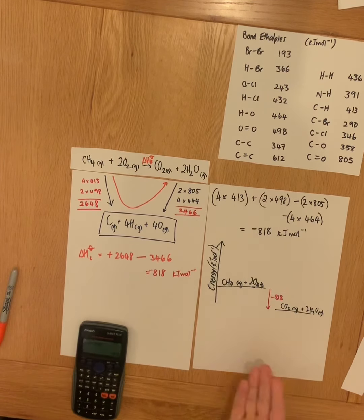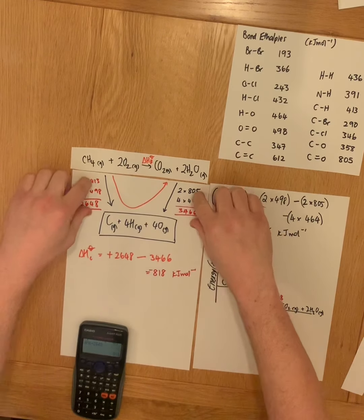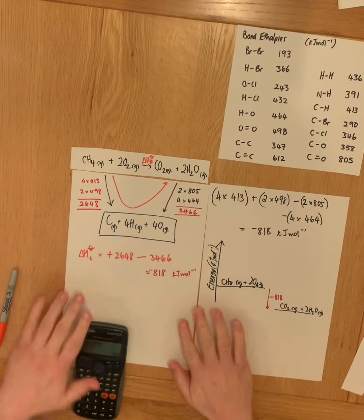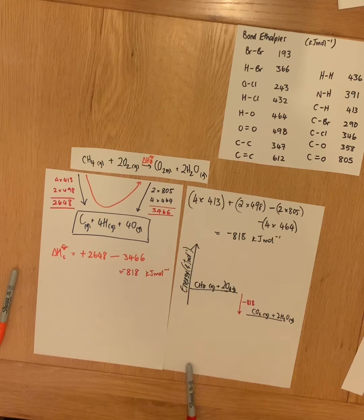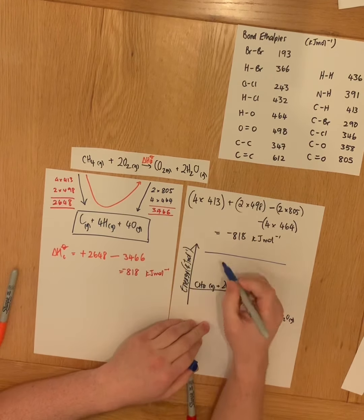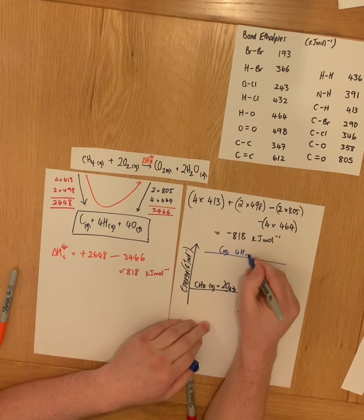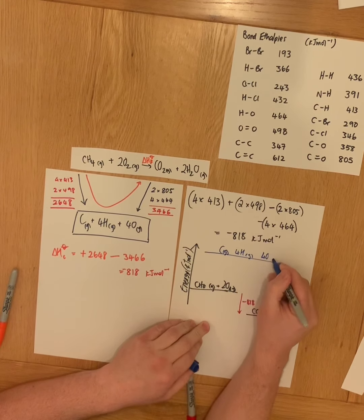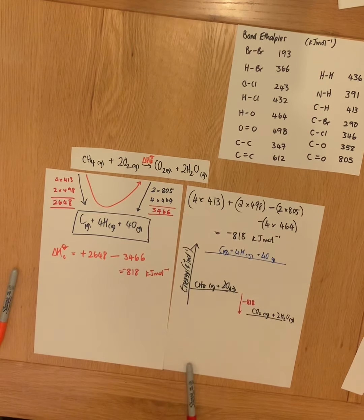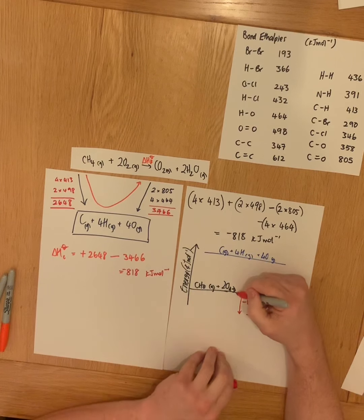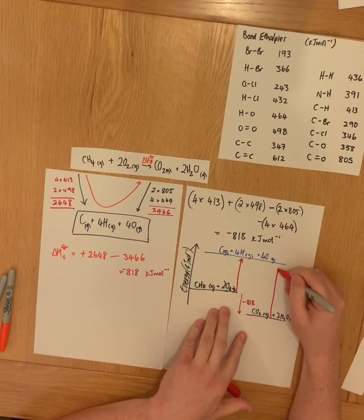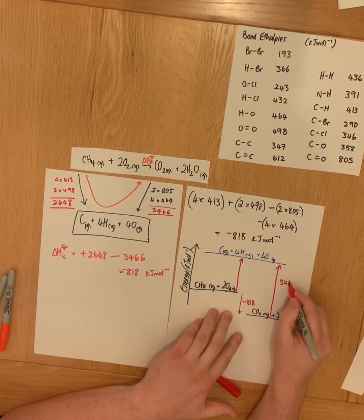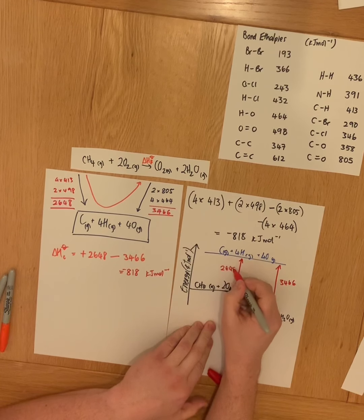Wonderful. I can incorporate these two enthalpy changes on my energy level diagram as well, by putting in two more arrows and one more energy level. So I can have the energy level of my gaseous atoms, so carbon, hydrogen and oxygen. And I know that the bond enthalpy,